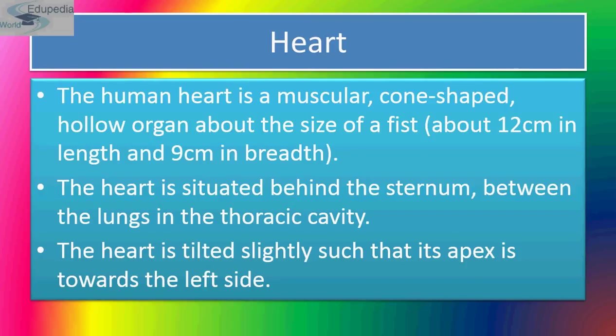So, the heart is situated behind the sternum between the lungs in the thoracic cavity, and the heart is tilted slightly such that its apex is towards the left side. It is protected from injuries by the ribcage and sternum ventrally, and by the vertebral column dorsally.